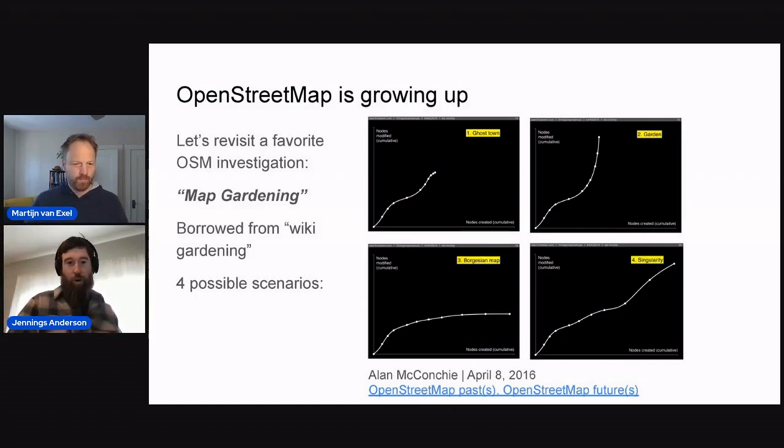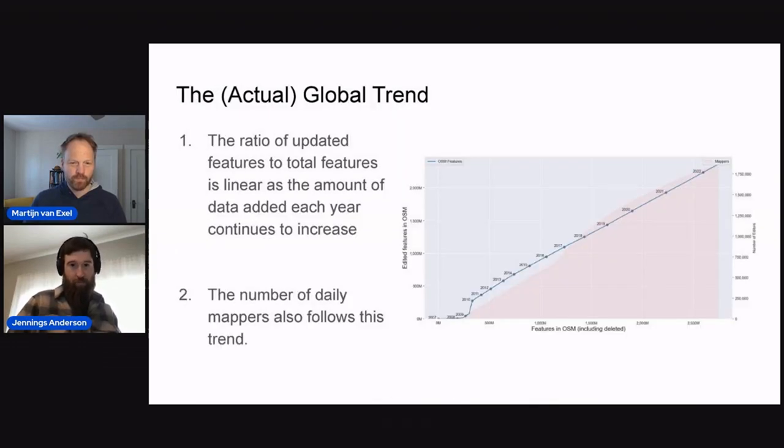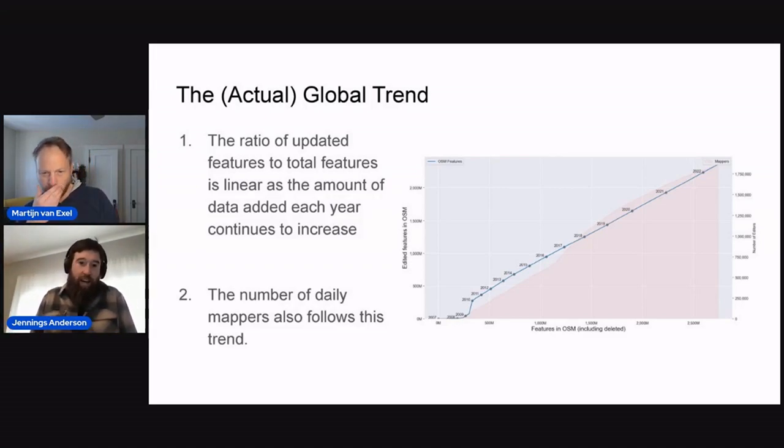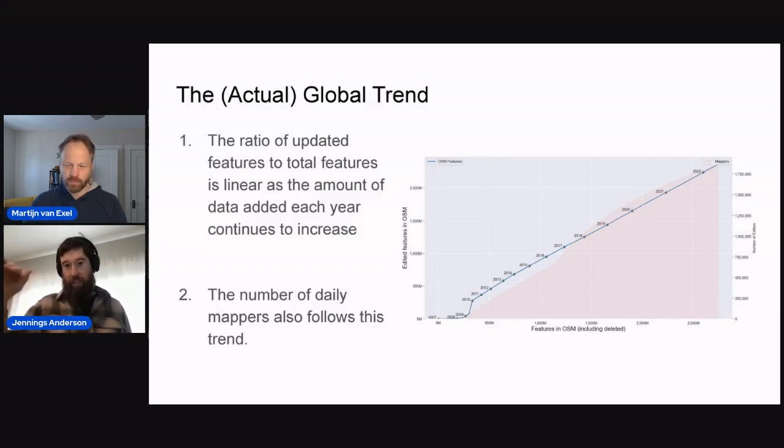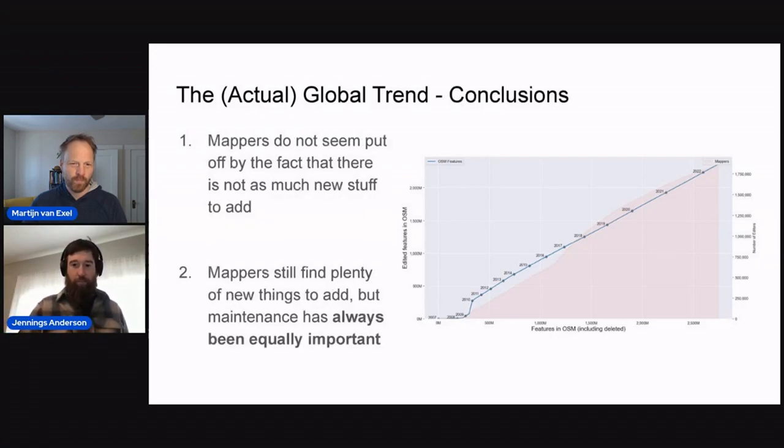And the second case we'd see where this would be like a true garden, right? Where we have everything is planted, but then no new data comes in and it's only just going into this maintenance phase, if you will. I see people talking about that in the chat as well, this maintenance or gardening phase as data is continued to be edited. And then the third way we get this kind of Borgesian map where only data is added and not as much edited. So I'm going to jump ahead now to what we actually see. Martin has got the slides. So this is what we end up seeing, this kind of interesting global trend of this linear global trend, where the ratio of updated features to the total features in the map is fairly linear.